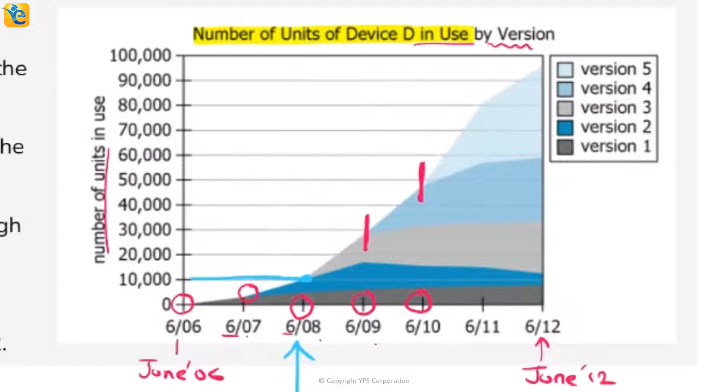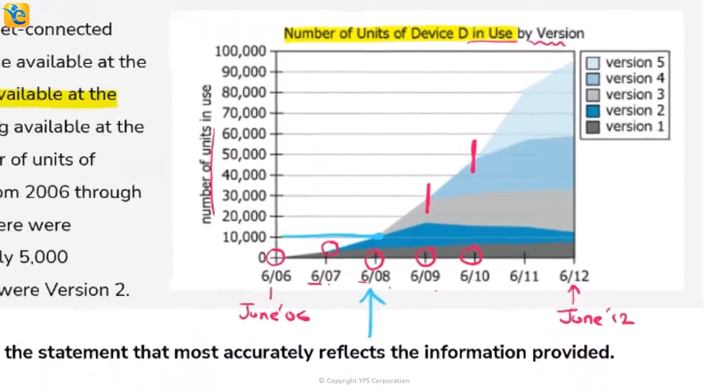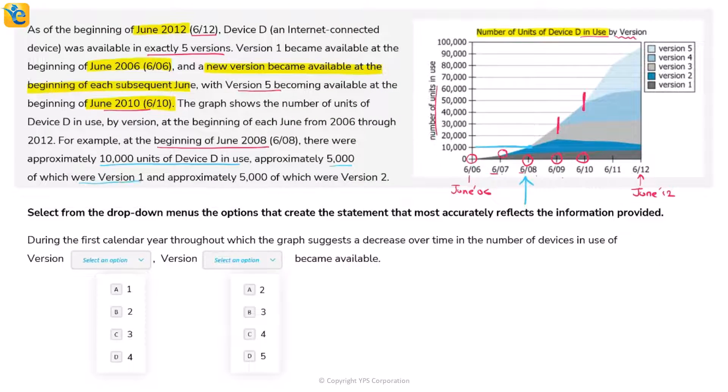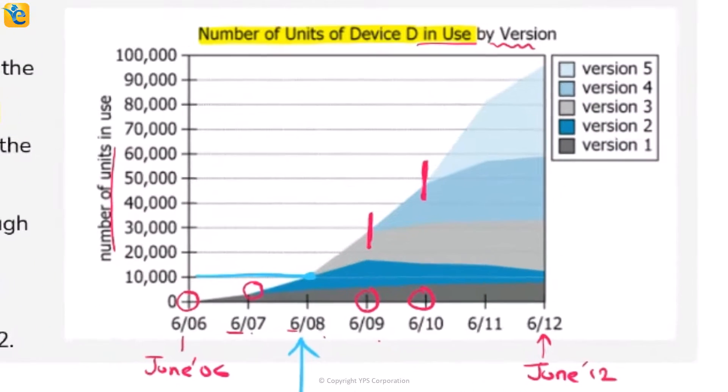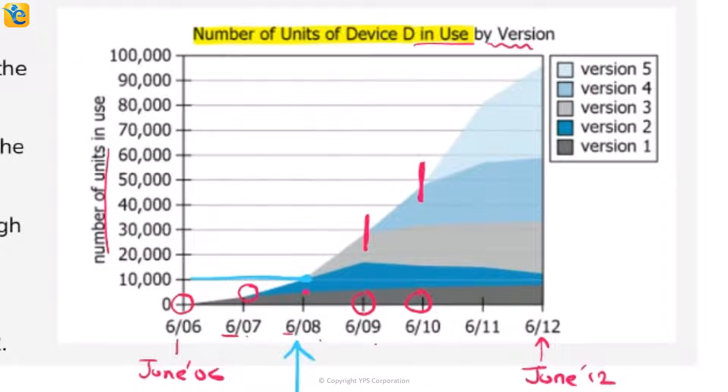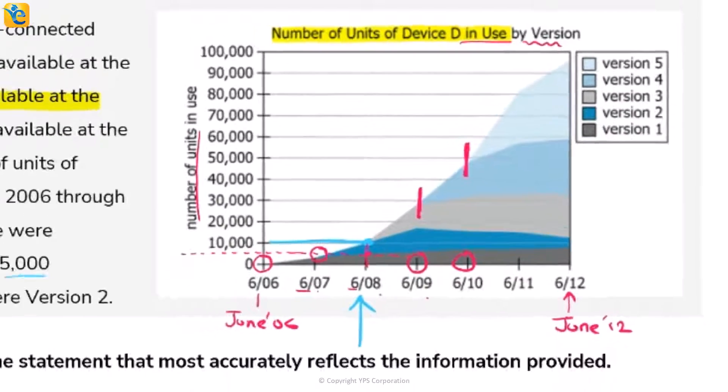The data shows 5,000 were Version 1 and approximately 5,000 were Version 2. We can see this because the halfway point where the gray section ends is the middle of the first unit, so both are half and half—5,000 each.